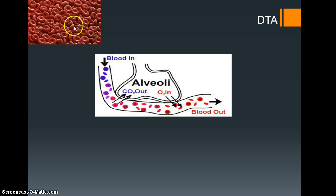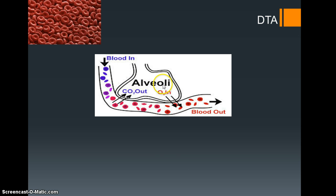What we're trying to work out is how oxygen actually gets from the alveoli down into the working muscles. We know that there's diffusion across from the alveoli into the red blood cells, but it's a little bit more complex than that, and we're going to look at that right now.